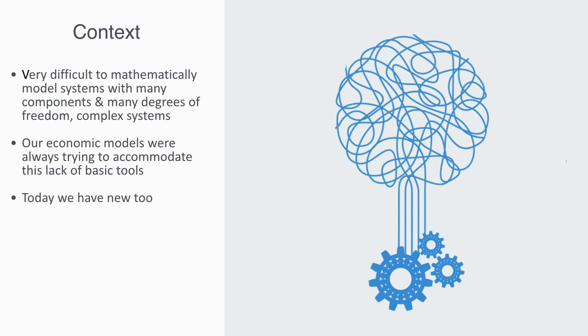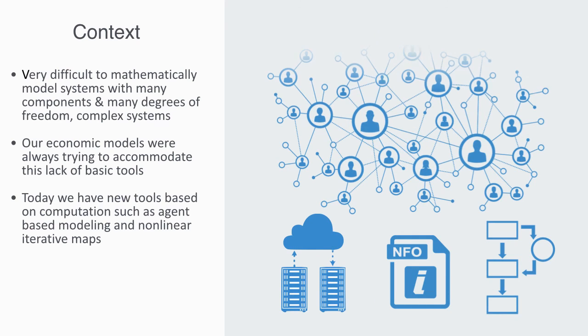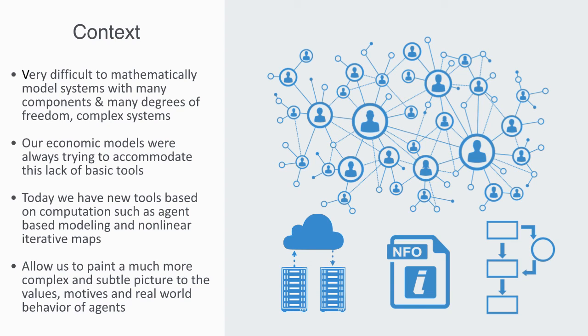This is because they're trying to encode complex phenomena into traditional tools, many of which were invented some three or four hundred years ago. Today, we have new tools based on computation, such as agent-based modeling and non-linear iterative maps. These computational models can handle massive amounts of information, the kind that Sir Isaac Newton could have only dreamt of. From them, we can get a much richer model that doesn't require these very simplified reductive assumptions of standard economics. They will allow us to paint a much more complex and subtle picture of the values, motives, and real-world behavior of agents. But in order to do this, we need a basic understanding of the behavior of agents, some explanation of all of the key considerations that we've been discussing in this video. And this is what the new area of behavioral economics is tackling.